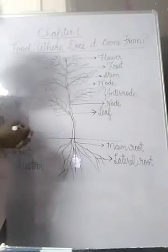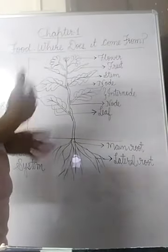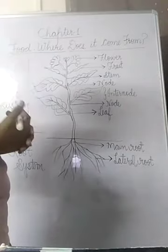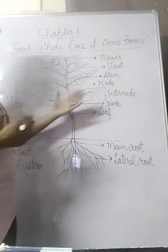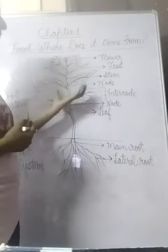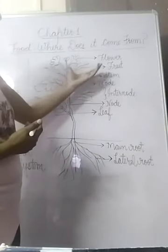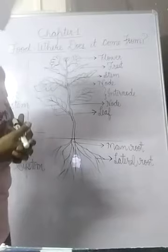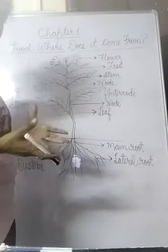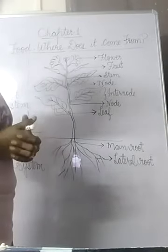In case of spinach and mint — mint means pudina — in these plants we eat the leaves. So in some plants we eat root, and in some plants we eat leaves. In some plants, fruit is edible — like banana, mango, and apple. These are different fruits which we eat.